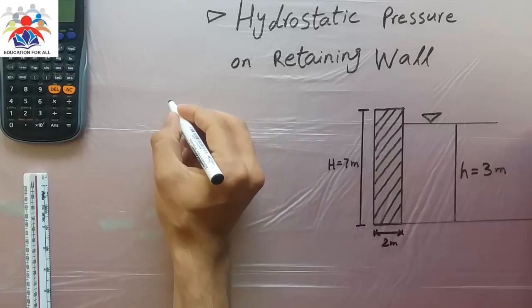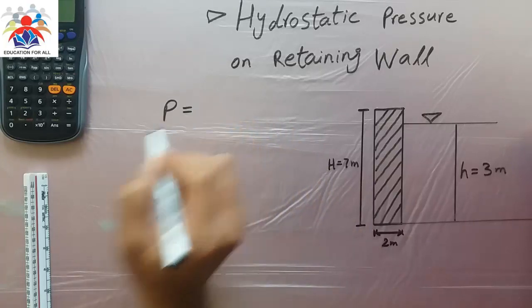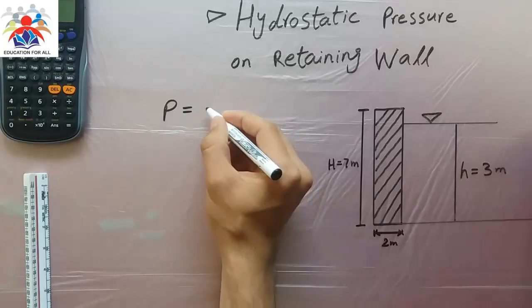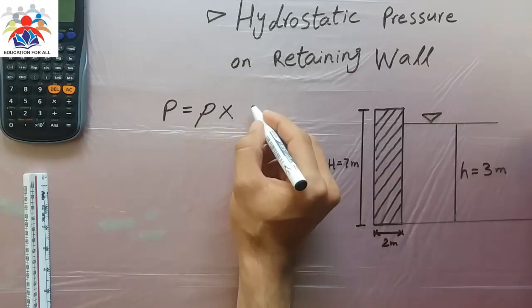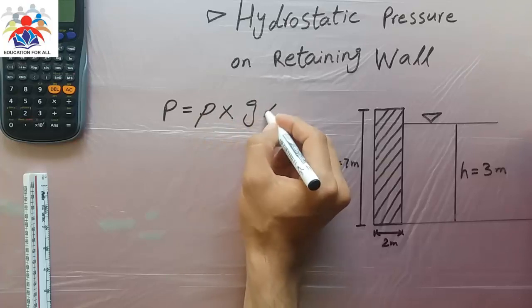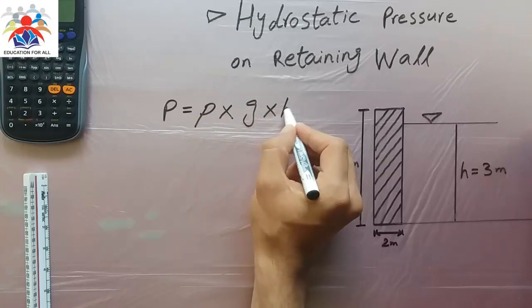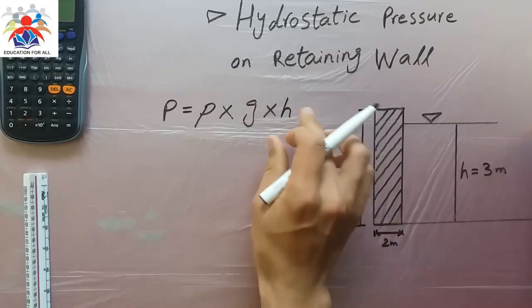So how we can calculate it? The formula which we are going to use is P is equal to rho multiplied by g multiplied by height, the height of liquid.